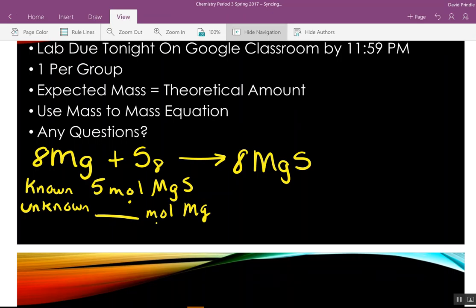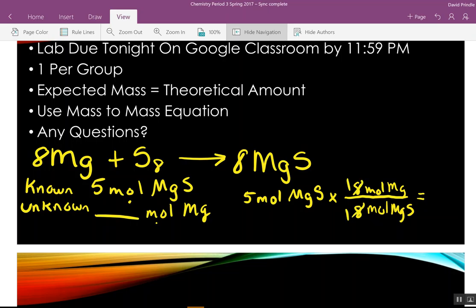So we're going to start with 5 moles of MgS. Now, the swinging door is what called what? What do we call this thing? What it gets us from one side of the equation to the next side? Mole ratio. Now, we want to get rid of moles of MgS. So just like in fractions, that will go in the bottom. We want to get to moles of magnesium. What's our mole ratio of magnesium to magnesium sulfide? It's 8 to 8 or 1 to 1. So our answer is 5 moles of magnesium.